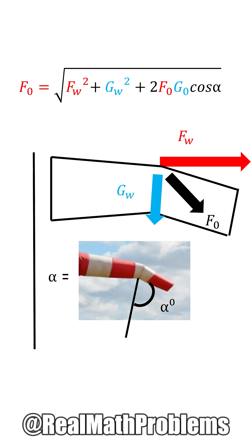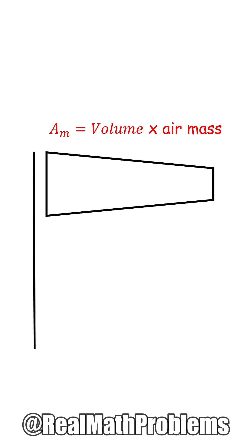For the air mass, we can calculate it as the windsock volume times the air density. For a standard windsock, the volume is 41.7 cubic meters and the air mass is 0.006 kilograms per cubic meter, which means 0.25 kilograms.